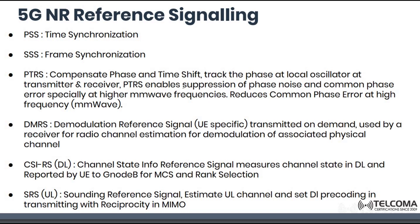PTRS is very important when we talk about millimeter wave, because at millimeter wave the frequency is very high. Suppressing phase noise and common phase error occurring at the boundaries is critical. PTRS tracks the phase at the local oscillator at both the transmitter and receiver, compensates the phase shift when receiving data at very high frequency, and reduces the common phase error especially at millimeter wave.